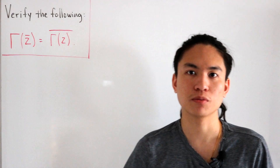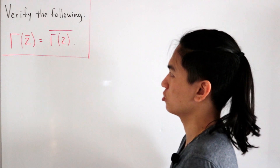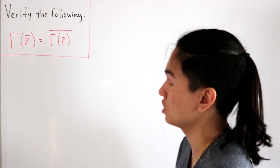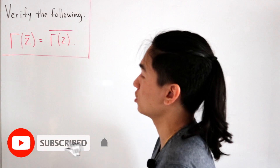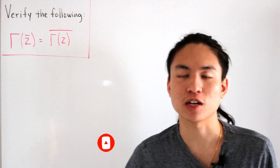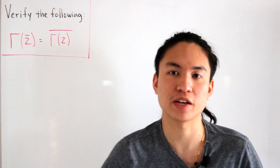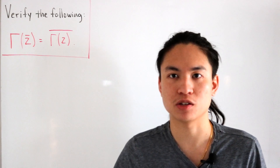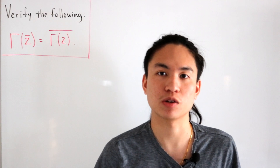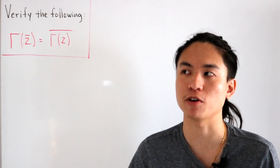Welcome back to another video. Today's verification is that we want to show that the gamma of the conjugate of some complex number z is equal to the conjugate of the entire gamma function itself. In today's video I'm going to be proving this in two ways. One is by simply using the integral representation of gamma, and the second way is by using what's known as the Weierstrass form of the gamma function.